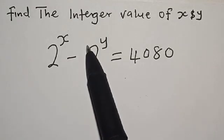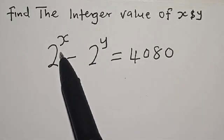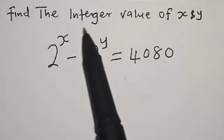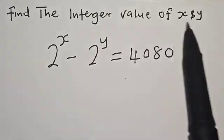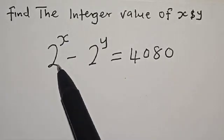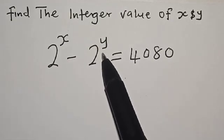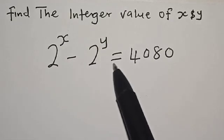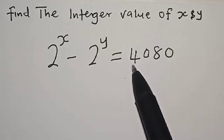Welcome to Math Gist. In this class, we want to find the integer value of x and y, where 2 raised to power x minus 2 raised to power y is equal to 4080.